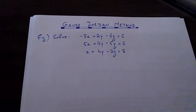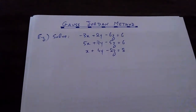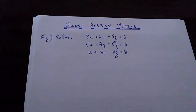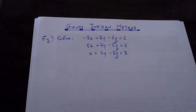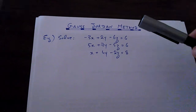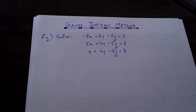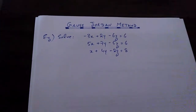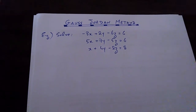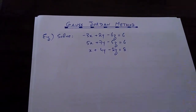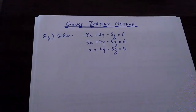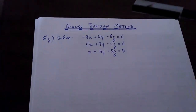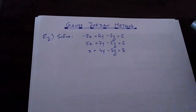This method is very much connected to the Gaussian elimination method, which I have discussed already in one of my previous videos. If you want to have a look, you can find the link in the description box. Gauss-Jordan is an extension of the Gaussian elimination method, so I prefer that you watch Gaussian elimination first if you haven't had any acquaintance with that. Watch that video first and then move on to this one.